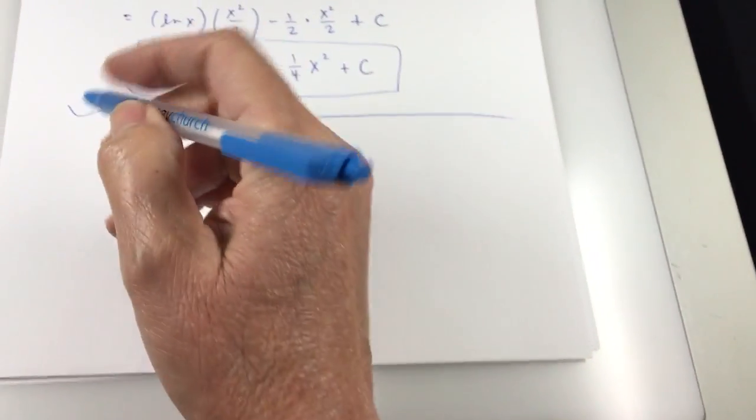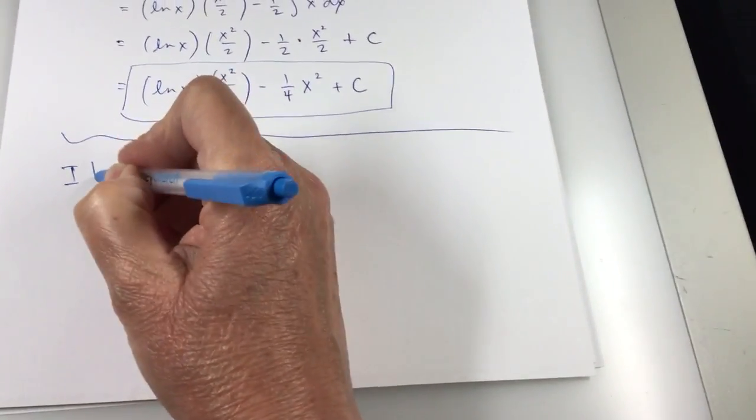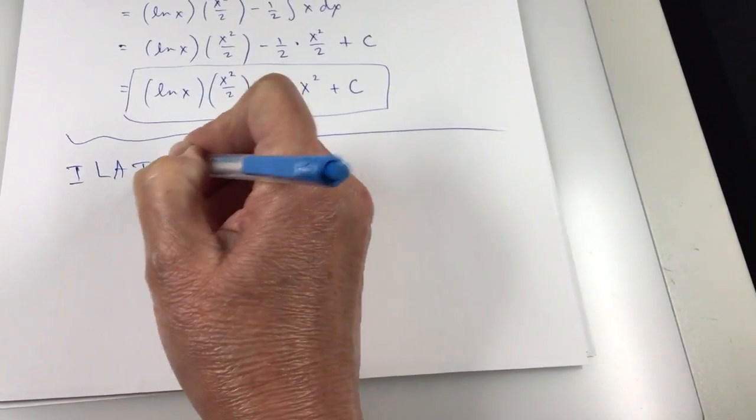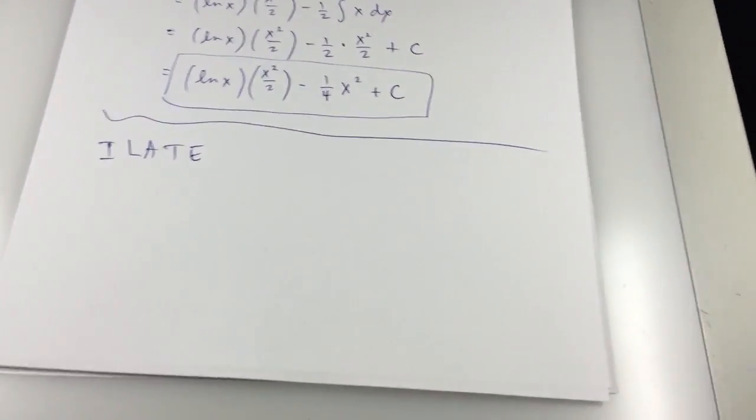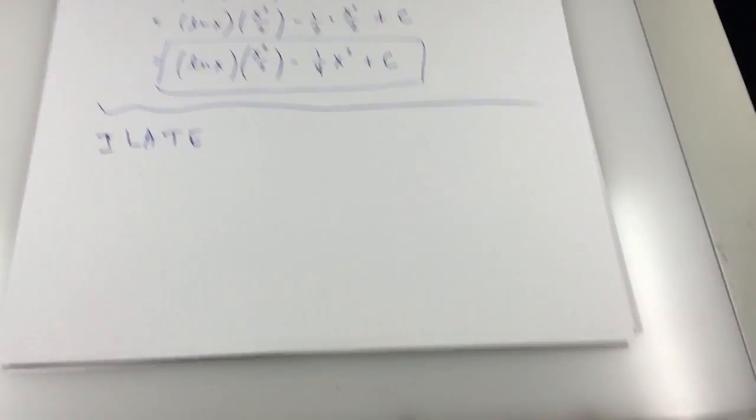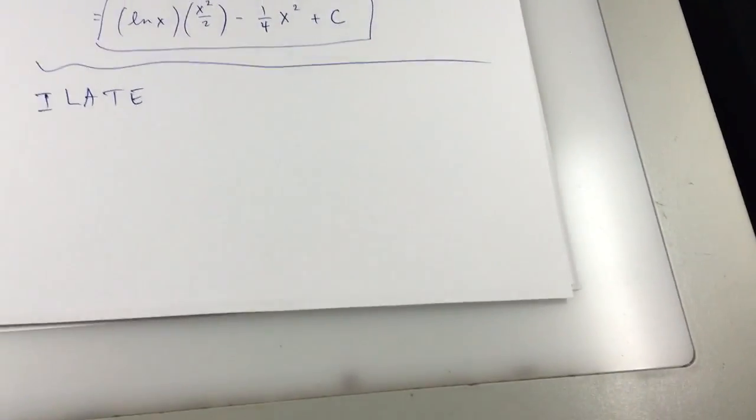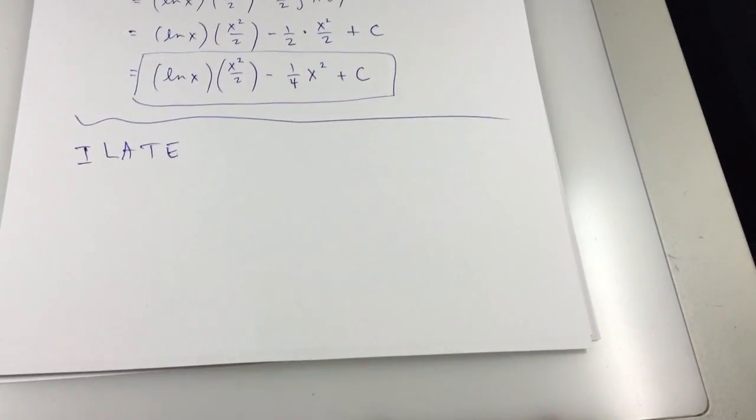And so here's the key: I-L-A-T-E. Now, what that is, you go through these letters in this order,